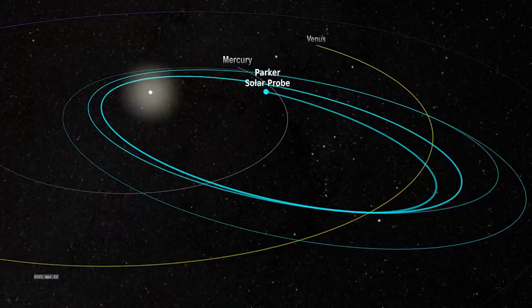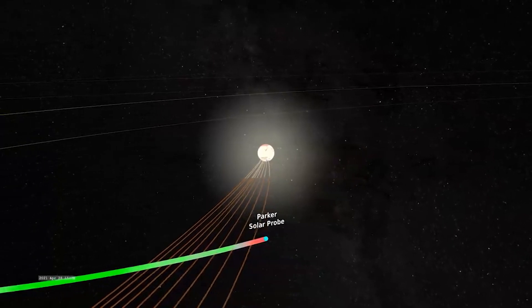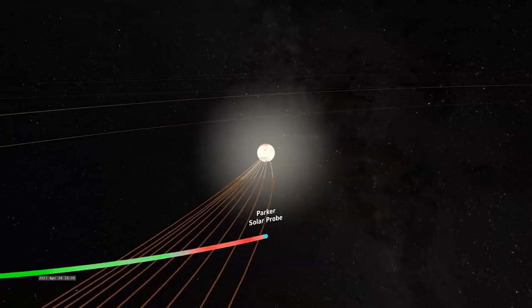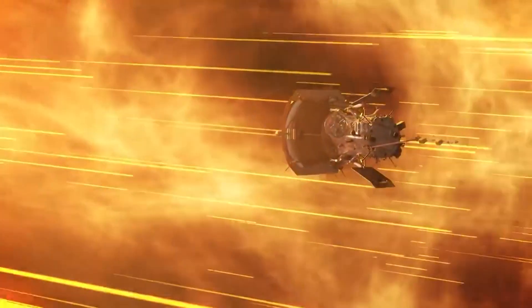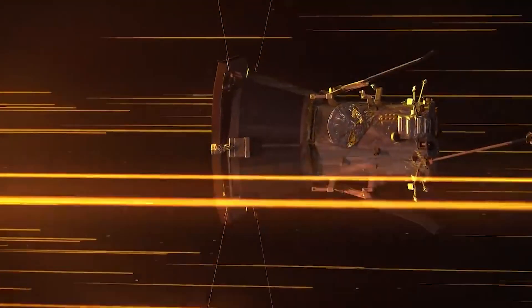However, this flyby is not the closest approach for the spacecraft to the Sun. The spacecraft will get closer to the Sun during subsequent flybys, getting as close as 6,115,500 kilometers from our star's surface.